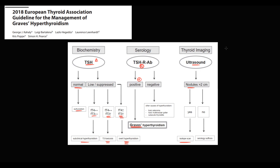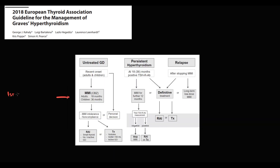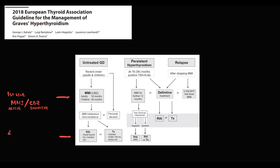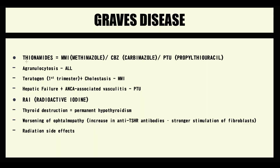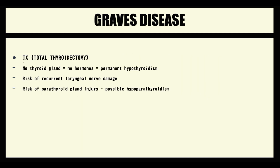How do we treat Graves' disease? According to current guidelines, there are two major approaches. The first step is drugs — thionamides: methimazole and carbimazole, which are essentially the same drug in different forms (methimazole is the active form, carbimazole the inactive form). If thionamides do not help, we use radioactive iodine. In severe cases, especially with multiple nodules, we use thyroidectomy. Alternative drugs include propylthiouracil and beta blockers. Thionamides include methimazole, carbimazole, and propylthiouracil, followed by radioactive iodine, and finally total thyroidectomy as the last option.